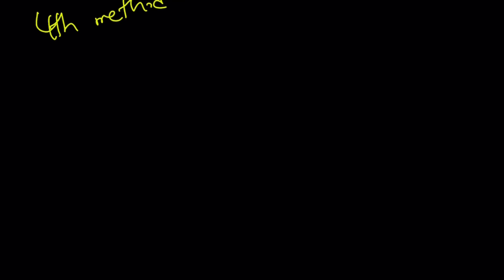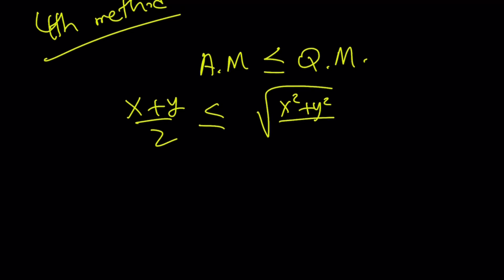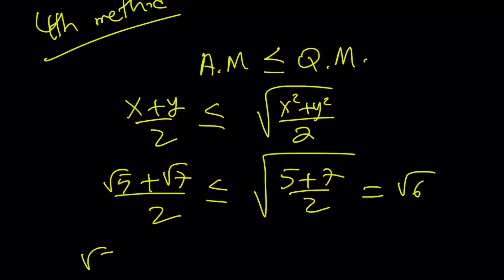So, the fourth method actually uses something called AM-QM inequality and QM is the quadratic mean and hopefully you can prove this easily especially with two numbers. x plus y over 2 which is the arithmetic mean is always less than or equal to the quadratic mean. Obviously arithmetic mean is greater than geometric and harmonic but quadratic beats the arithmetic. If we use square root of 5 and square root of 7 add them up divide by 2 this should be less than the square root of 5 plus 7 over 2 which is square root of 6 so square root of 5 plus square root of 7 is less than or equal to 2 square root of 6.